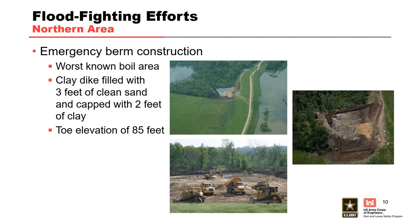In the northern area, the decision was made to construct an emergency berm on the land side of the levee to increase the weight of the land side soil block. The berm consisted of a perimeter clay dike with the interior filled with a minimum of 3 feet of clean sand capped with 2 feet of clay. The exterior was covered with a 10-foot wide and 2-foot thick layer of stone, with the toe of the berm at an elevation of 85 feet, 5 feet above the original ground surface.